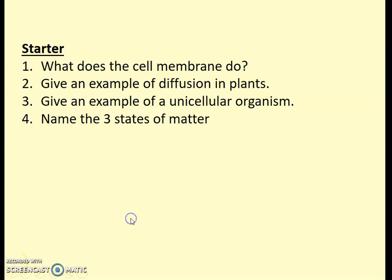Okay, so let's have a look at how you got on with that. So the cell membrane, that controls what goes in and out of the cell. Give an example of diffusion in plants, that's water getting into the plant via the root hair cell. An example of a unicellular organism is euglena. And name the three states of matter, which are solid, liquid and gas. So that was one of your facts you need to learn from this lesson.